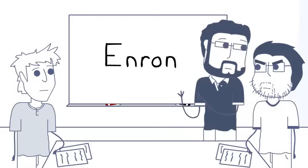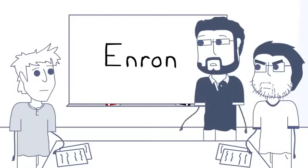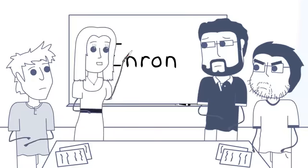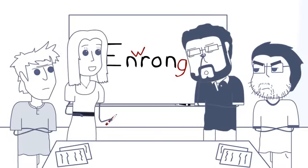Enron was the fourth largest company in the world when it completely just went under. Wow. How did that happen? Something went Enron wrong. Thank you, Barbara.